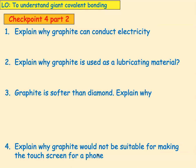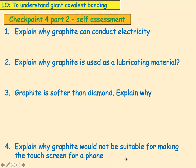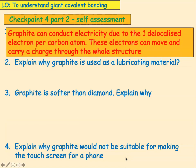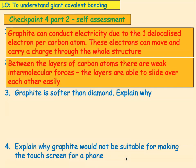The second part of the checkpoint: answer the questions and come back when you've answered them. Explain why graphite can conduct electricity: graphite can conduct electricity due to the one delocalised electron for every carbon atom — these electrons can move and carry charge through the whole structure. Explain why graphite is used as a lubricating material: between the layers of carbon atoms there are weak intermolecular forces, so the layers are able to slide over each other easily, which is what you need for a good lubricant.